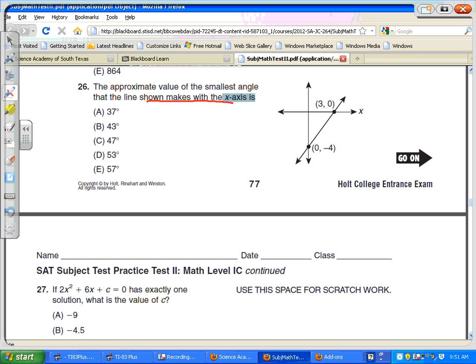So here's the x-axis, and the smallest angle is going to be this angle right here, and we have a right triangle where this is 3 and this is 4. Of course, the hypotenuse is 5. It's a 3-4-5 right triangle.